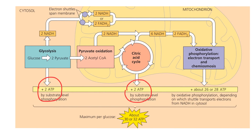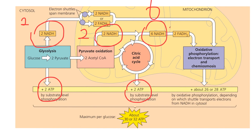We need to account for the reduced NAD and reduced FAD produced at each stage. In glycolysis, per glucose molecule, two reduced NAD are formed. In the link reaction, one reduced NAD is produced per pyruvate, but since there are two pyruvates per glucose, totally two reduced NAD are formed. In the Krebs cycle, per one cycle, three reduced NAD are produced, so considering one glucose molecule, totally six reduced NAD and two reduced FAD molecules are formed. It is only in the Krebs cycle where reduced FAD molecules are formed.